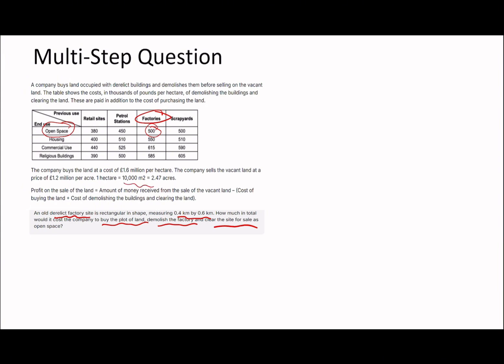The dimensions are given in kilometres so I'll convert to metres: the total area is 400 metres by 600 metres, which is 240,000 m². Since 10,000 m² equals one hectare, dividing 240,000 by 10,000 gives us 24 hectares.